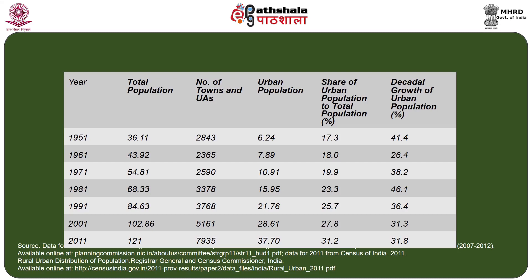More and more urban areas are coming up, which is an indicator for development. In 2001 the census indicated 2843 towns and urban agglomerations, whereas in 2011 this increased steadily to 7935 urban centers, clearly indicating that more and more urban growth is happening and settlements are coming up, which indicates that urbanization is a positive sign of development.